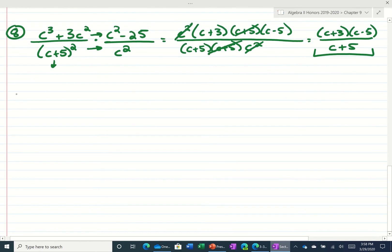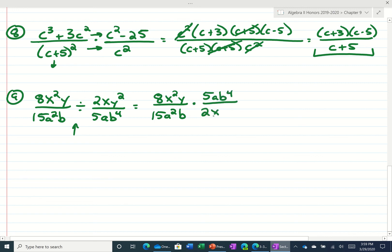A couple more for today. What if we had 8x squared y divided by 15a squared b divided by 2xy squared over 5ab to the fourth? First thing I'm going to do is I see a division, so I'm going to change that to multiplying by the reciprocal. 8x squared y over 15a squared b. We're going to keep that, change, and then flip the second one.